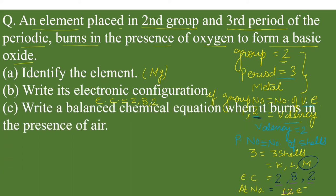Third part, write a balanced chemical equation when it burns in presence of air. It means we need to write equation of magnesium with oxygen. When magnesium reacts with oxygen, magnesium oxide is formed. The formula of magnesium oxide is MgO, which is a solid substance. And now we need to balance the chemical reaction. 2Mg plus O2 gives 2MgO.